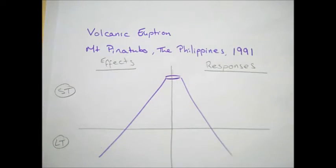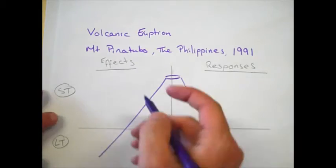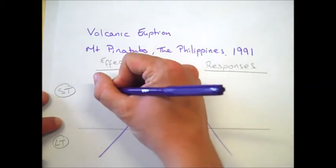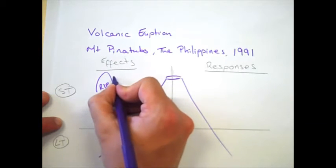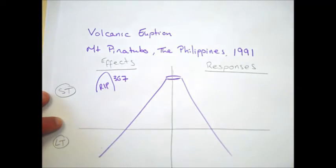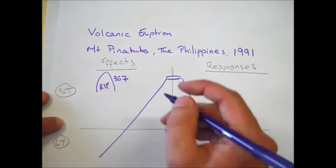Starting off with the short-term effects, obviously the most obvious one of any natural disasters is to think about the number of deaths. So we represent that as a kind of gravestone. It actually resulted in 367 deaths, mainly from pyroclastic flows and lahars.